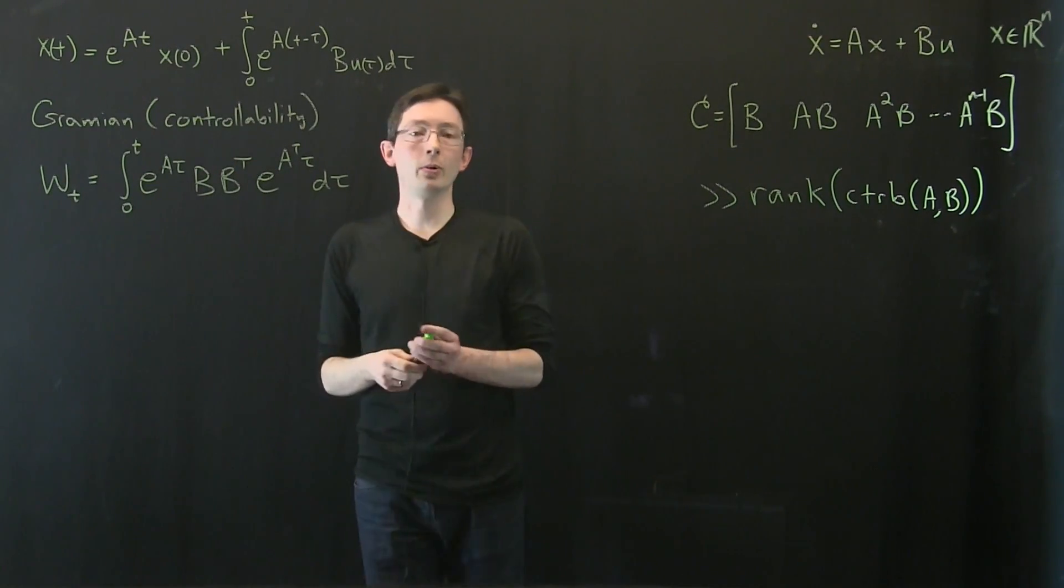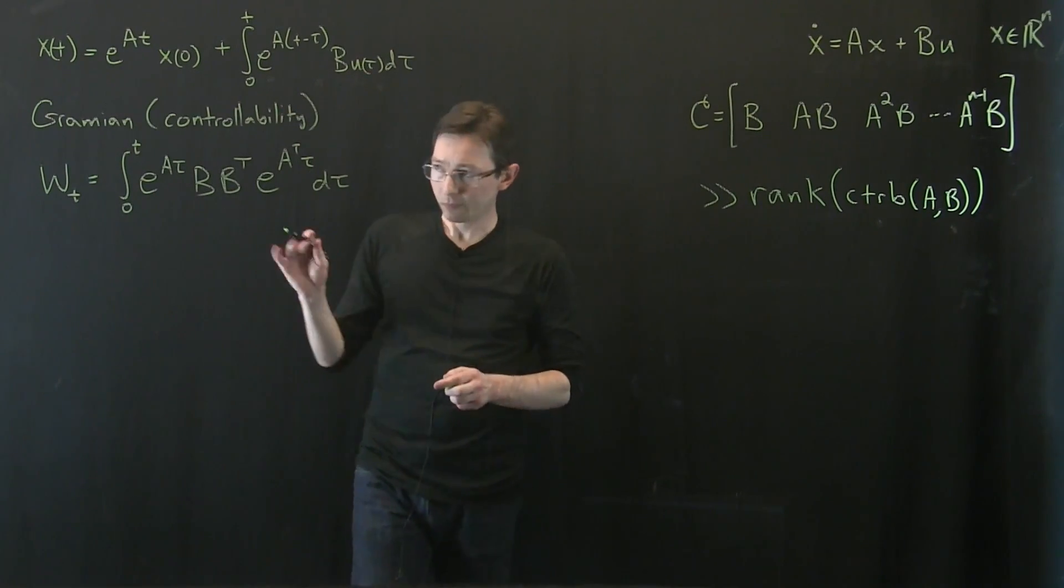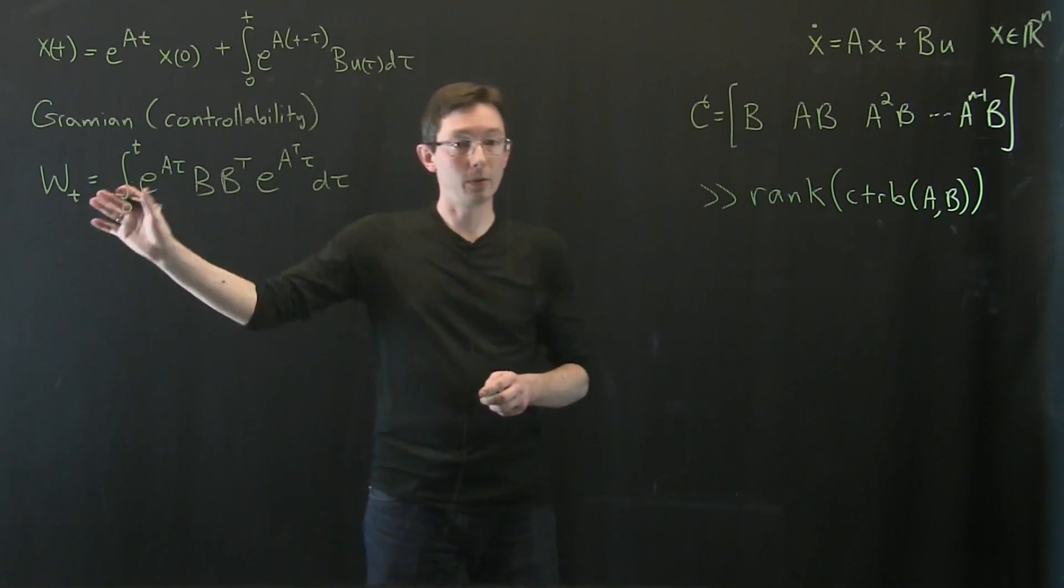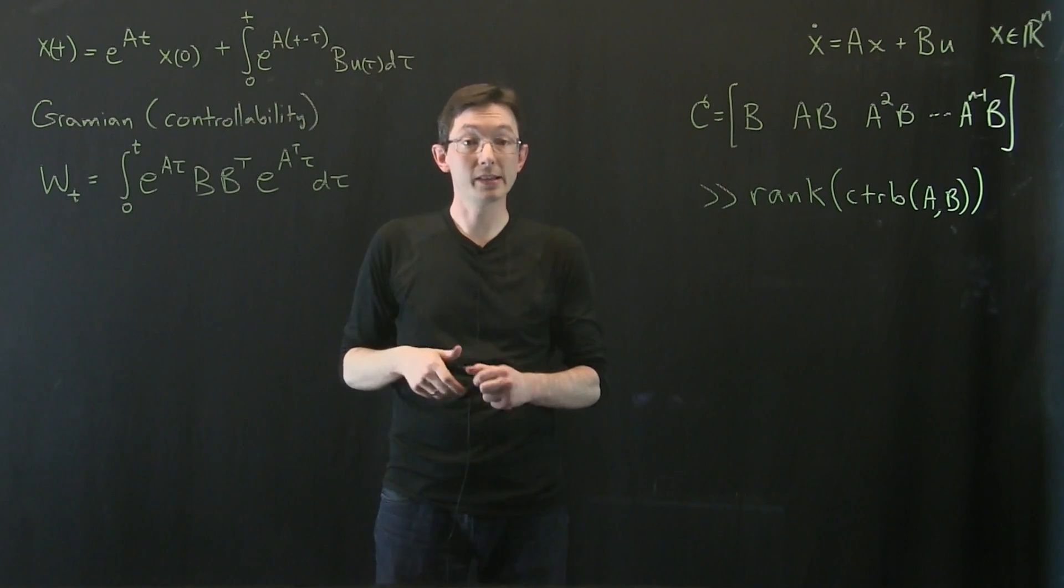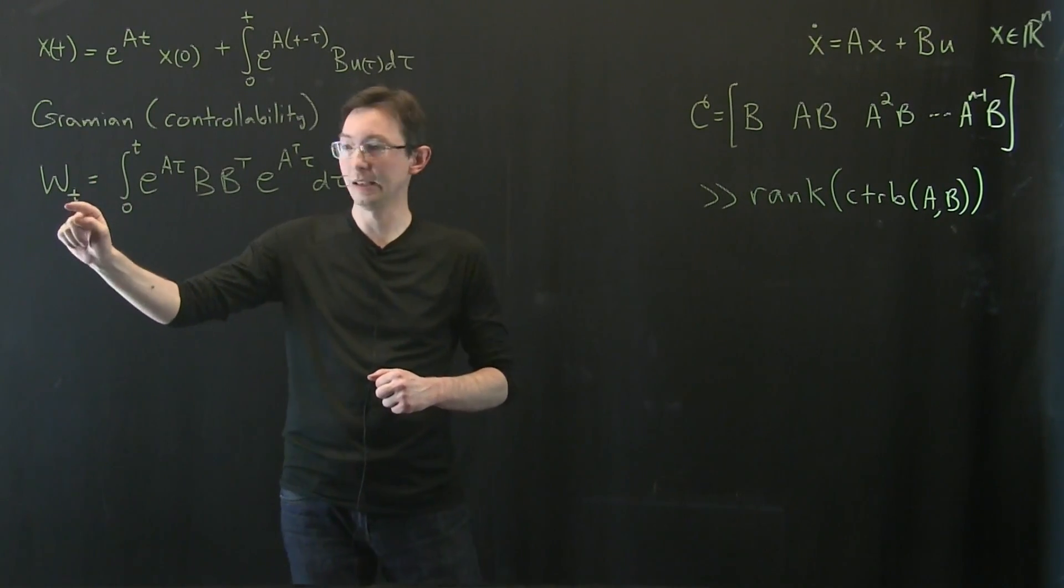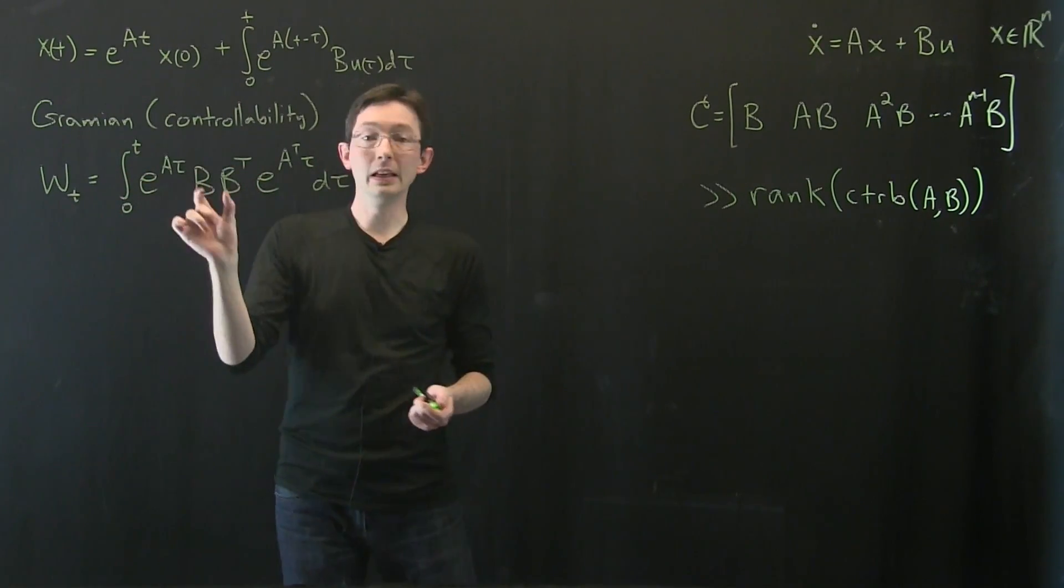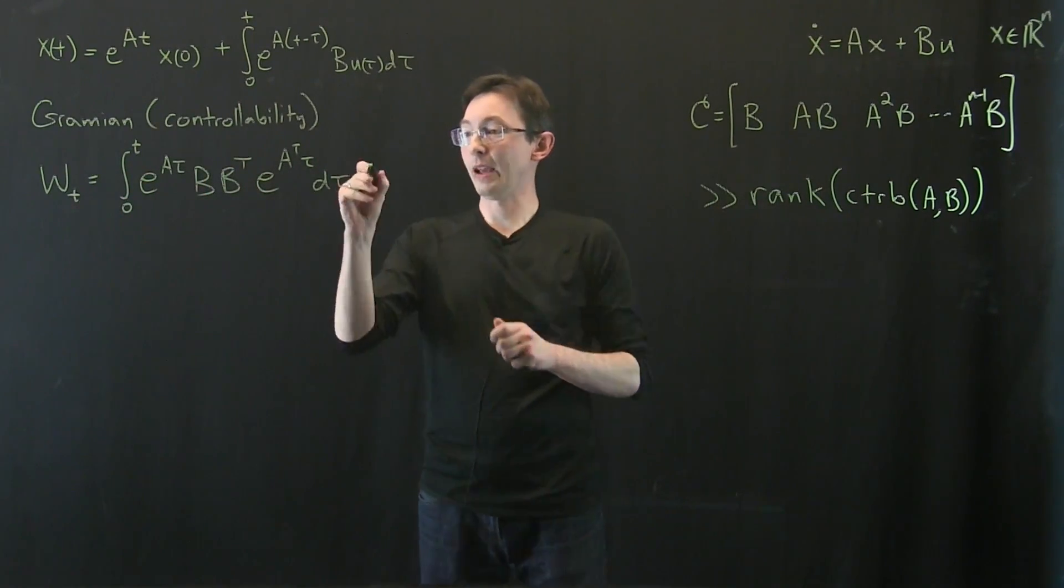And something I think is really important, so this was a lesson I was taught early on, is you should always think, when you're working with a mathematical object, you should always think to yourself, what am I and where do I live? So this is the controllability Gramian, and it lives in Rn by n.